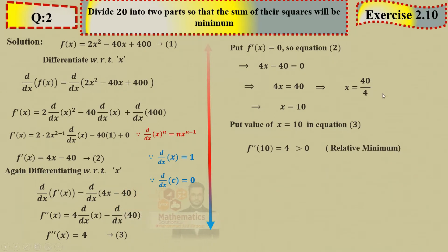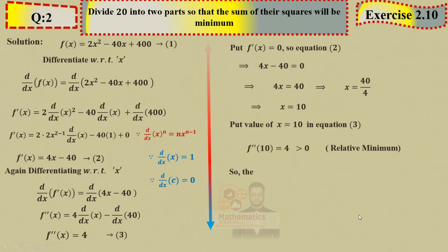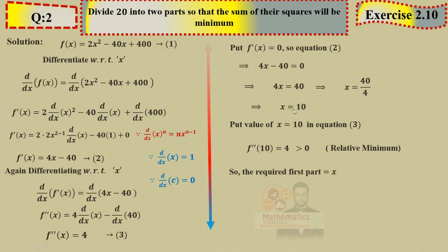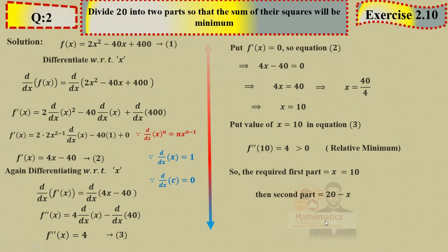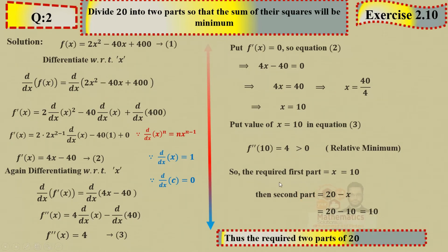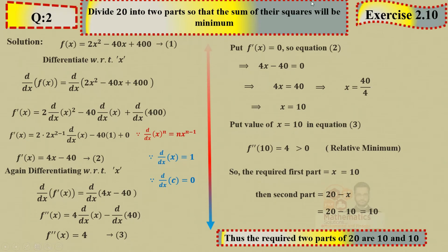So both parts are 10 and 10. You can see these are similar types of questions — you just need to decode the question once, and then the second derivative process is the same as in 2.9. Question Number 3: find two positive integers whose sum is 12 and their product of one with the square of the other will be maximum.